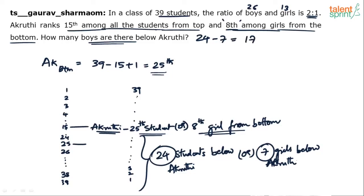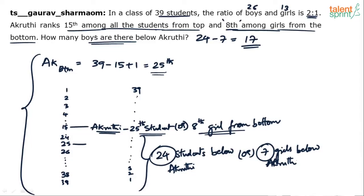17 is the correct answer. You don't need to write all this out in the exam — it is mental calculation. Akruti's rank from bottom is 25, so 24 students are below her. She is the 8th girl from the bottom, so 7 girls are below her. Therefore, 24 minus 7 equals 17 boys below Akruti. 17 is the final answer.